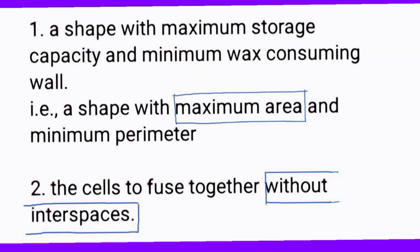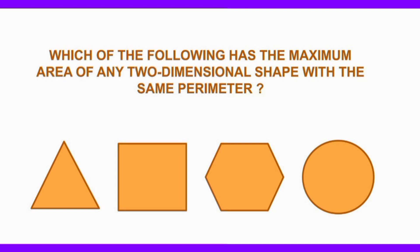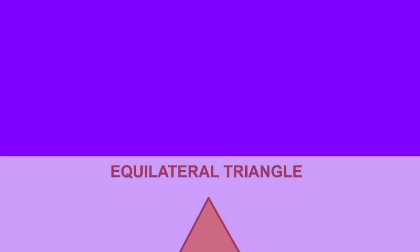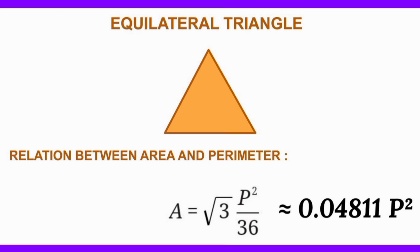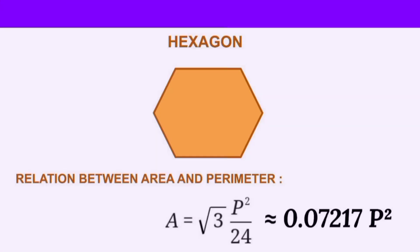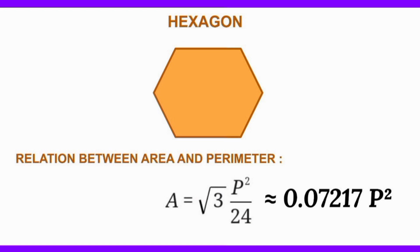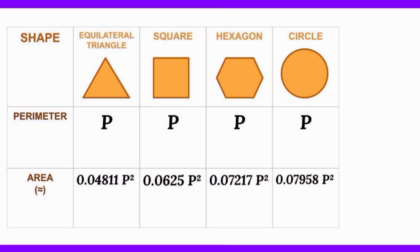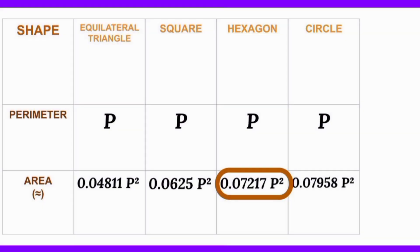Let us consider condition 1. Which of the following has the maximum area of any two-dimensional shape with the same perimeter? Let A denote the area and P denote the perimeter. The perimeter of a circle has a special name called circumference. We get the area of an equilateral triangle as 0.04811p². We get the area of a square as 0.0625p². We get the area of a hexagon as 0.07217p². We get the area of a circle as 0.07958p². Circle has the maximum area. But when circular cells are packed, they leave interspaces. So, let's opt for the hexagonal design.